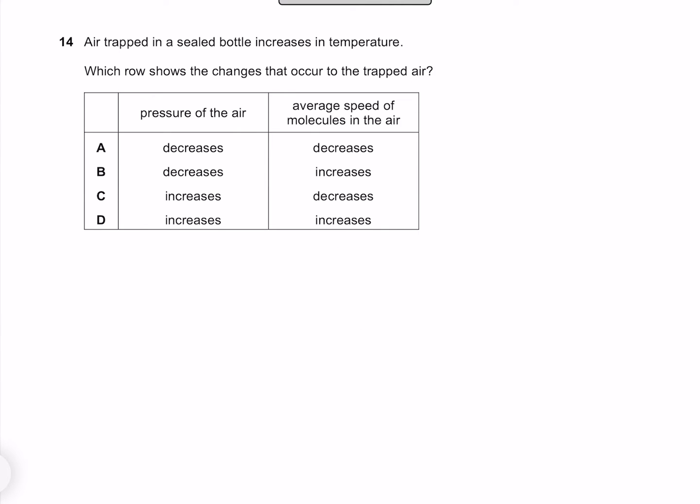Air trapped in a sealed bottle increases in temperature. Which row shows the changes that occur to the trapped air? An increase in temperature is going to result in an increase in pressure and an increase in the average speed of the molecules in the air. So our answer must be D.